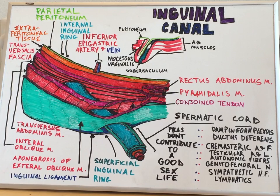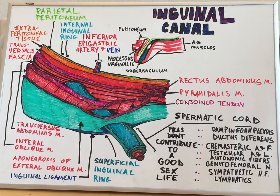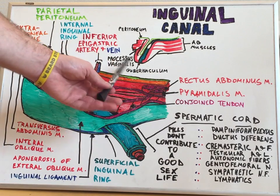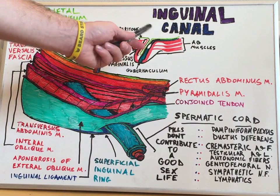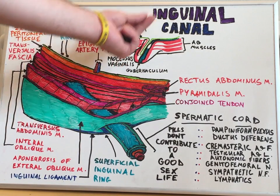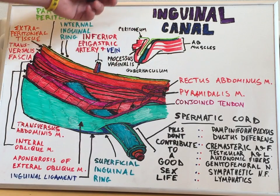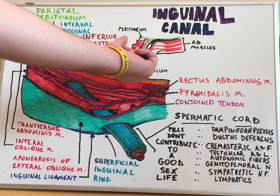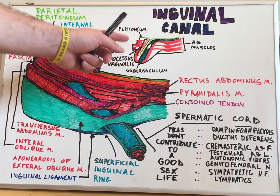This pathway is fairly complex, so to understand it we need to talk about the development of the inguinal canal. In development there's a structure called the gubernaculum which attaches to the future testicles and actually yanks and pulls down on it, effectively creating the future scrotum with this outpouching.